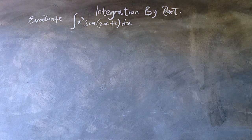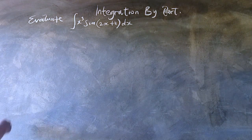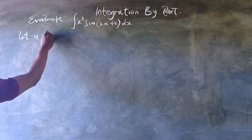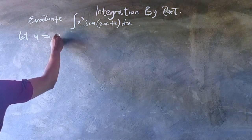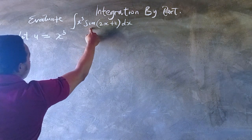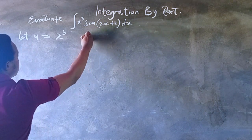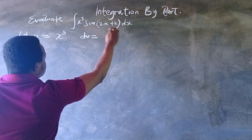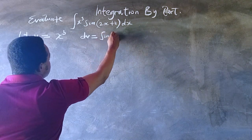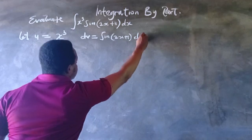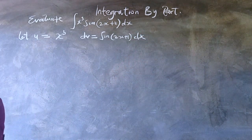This lesson is part of a series on integration by parts. Here we have to integrate the integral of x raised to power 3 multiplied by sine of 2x plus 1, dx. What we do is separate this into a u component and a v component. Let u equal x raised to power 3 and dv equal sine of 2x plus 1, dx.